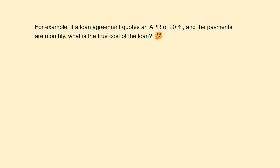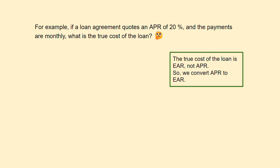For example, if a loan agreement quotes an APR of 20% and the payments are monthly, what is the true cost of the loan? The true cost of the loan is EAR, not APR.